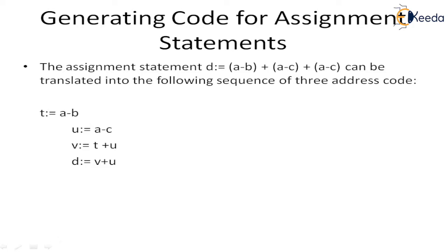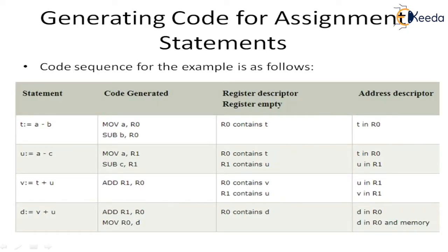Generating code for the assignment statement: the expression b * a - b + a - b + a - c can be translated into a sequence of three-address code statements. A temporary variable is used to hold a - b, then another register holds a - c, and then p and u are combined to form the final result.